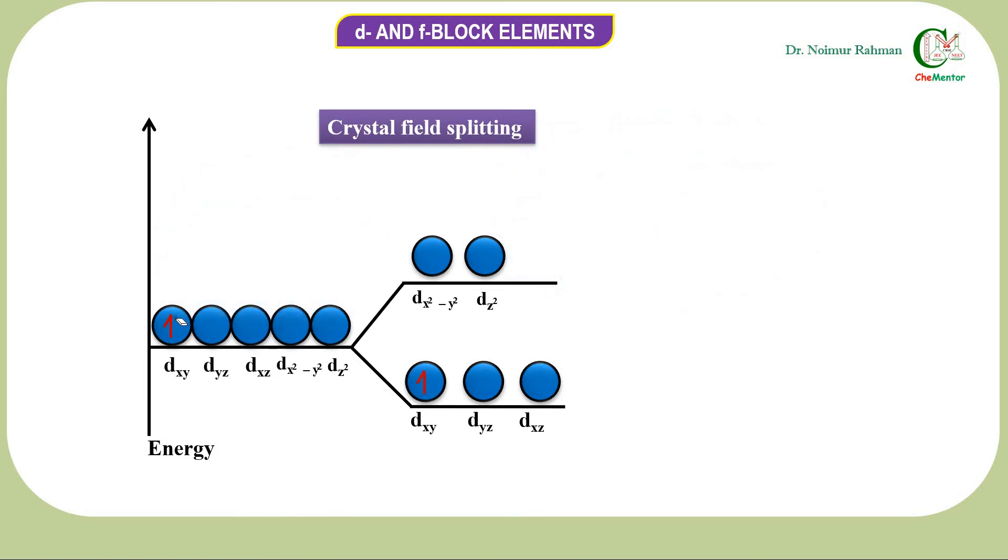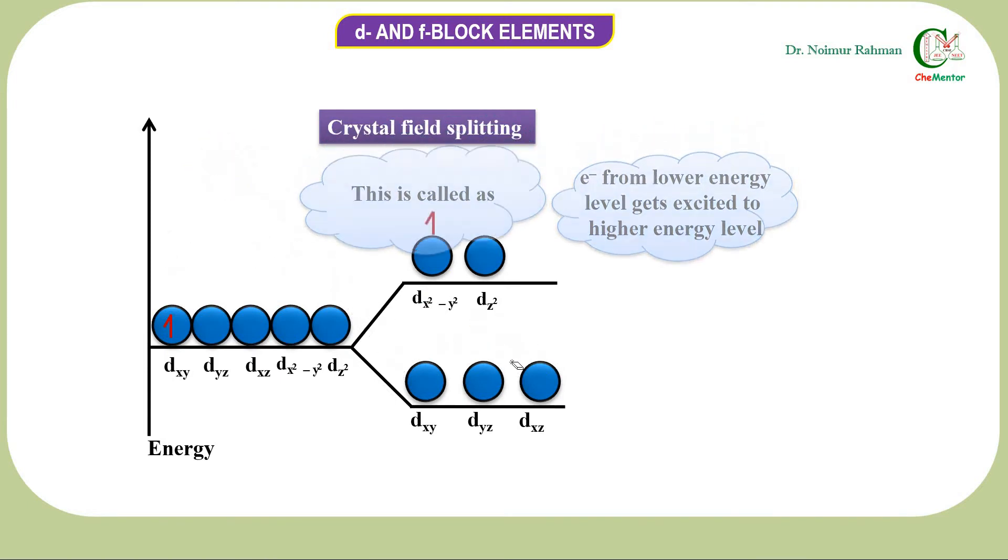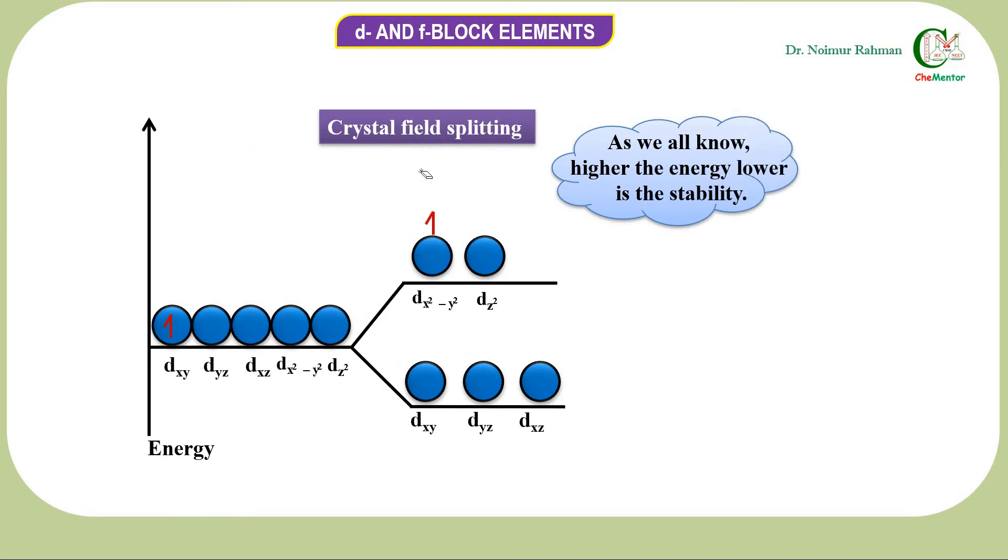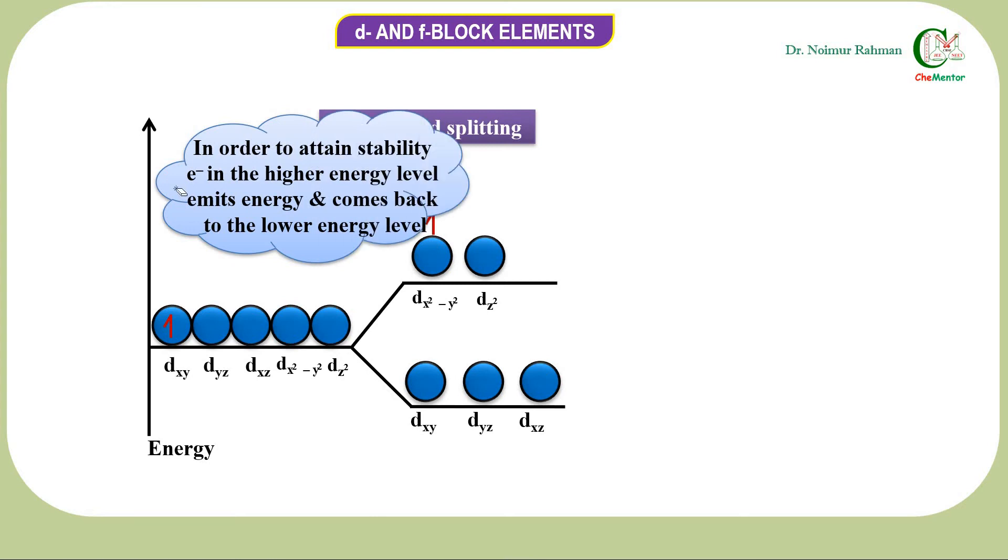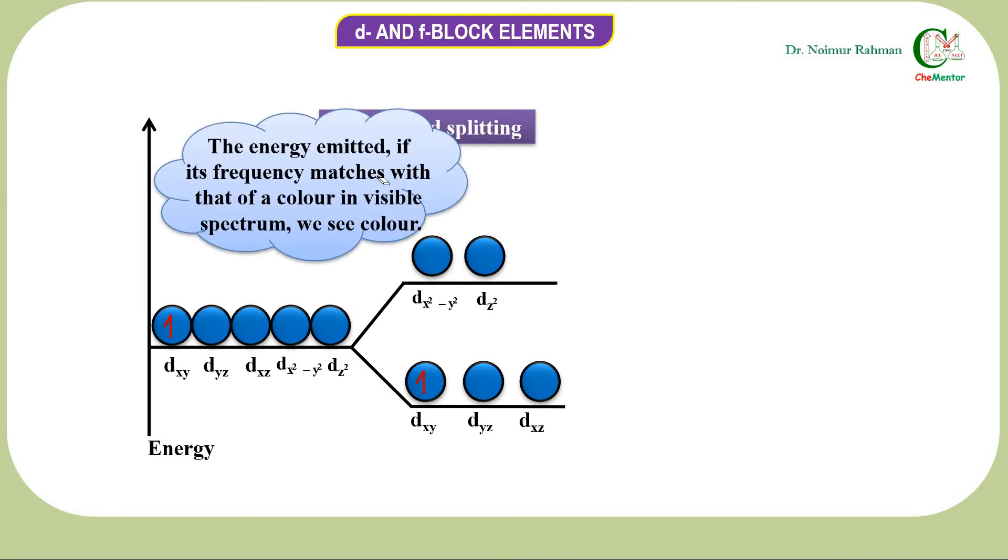Consider one electron in the d-subshell. This electron will be occupying the lower energy subshell. Once you provide energy, this electron is going to absorb light energy and will be transported to higher energy d orbital. This is called d-d transition. Higher the energy, lower the stability. In order to attain stability, the electron in the higher energy level emits energy and comes back to the lower energy level.